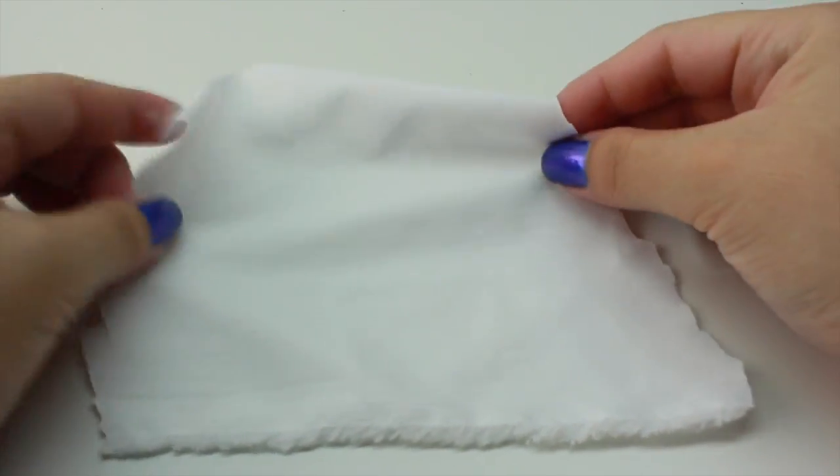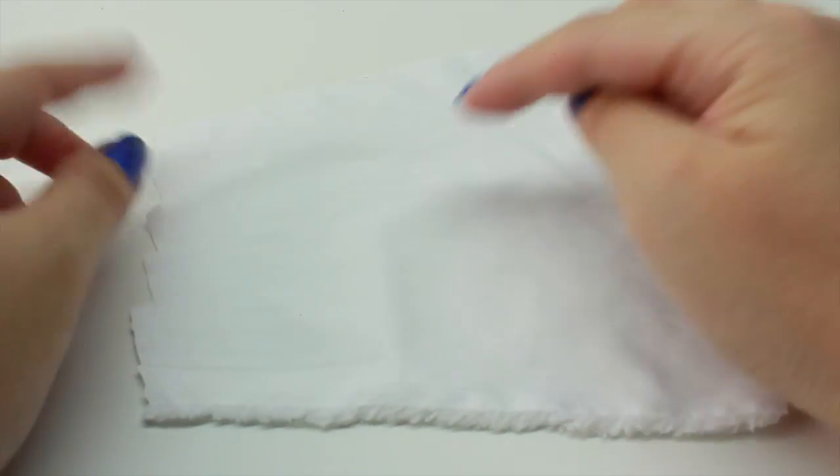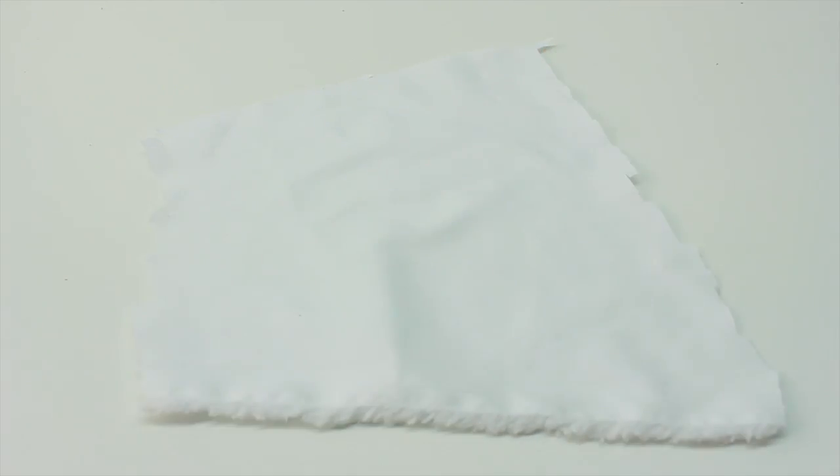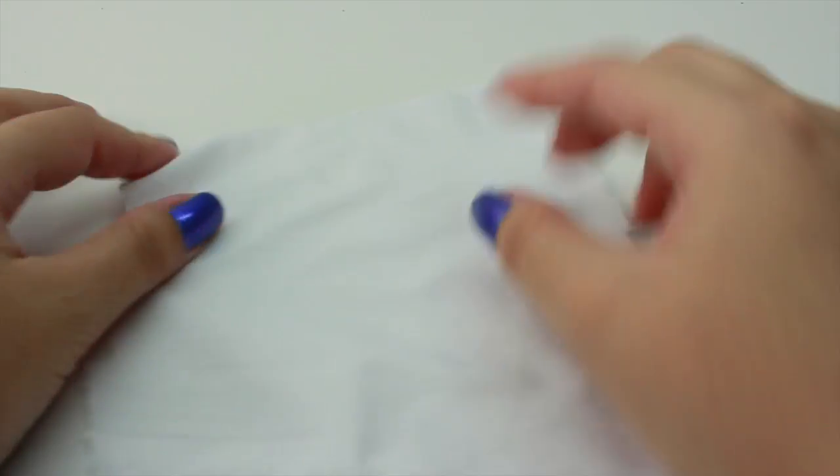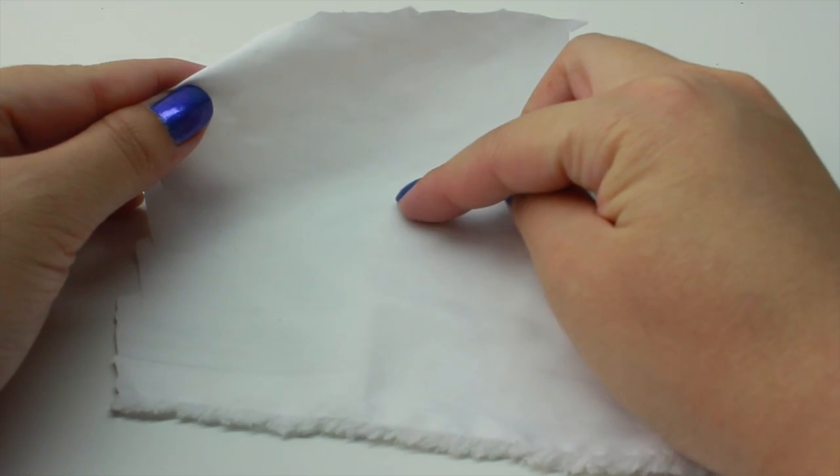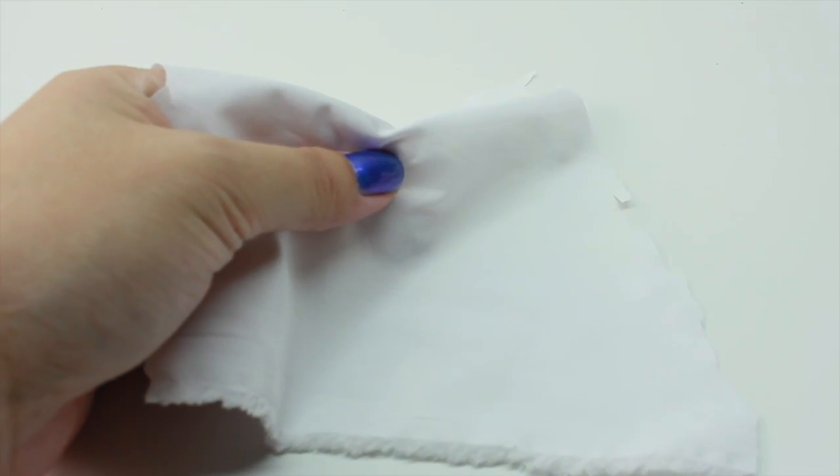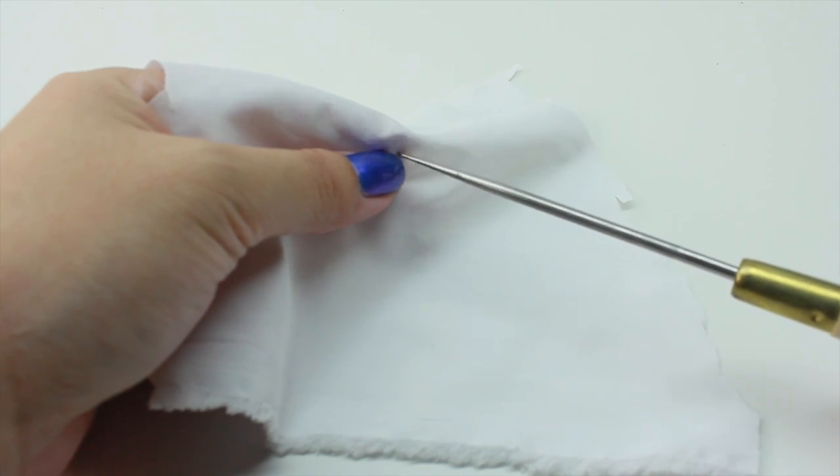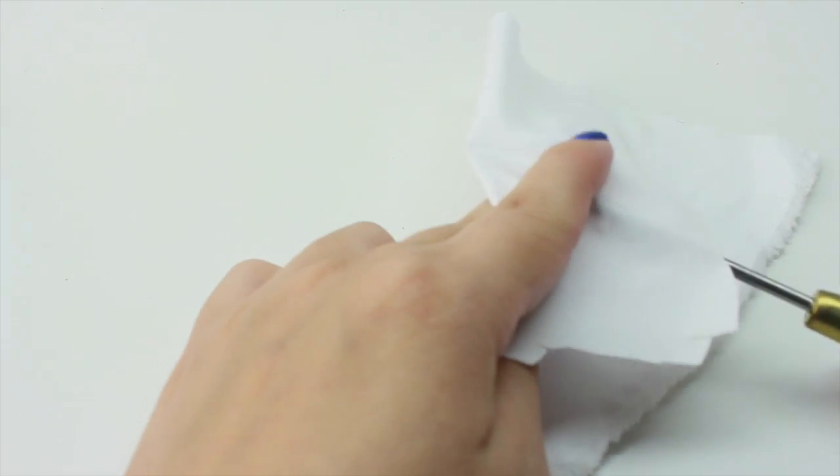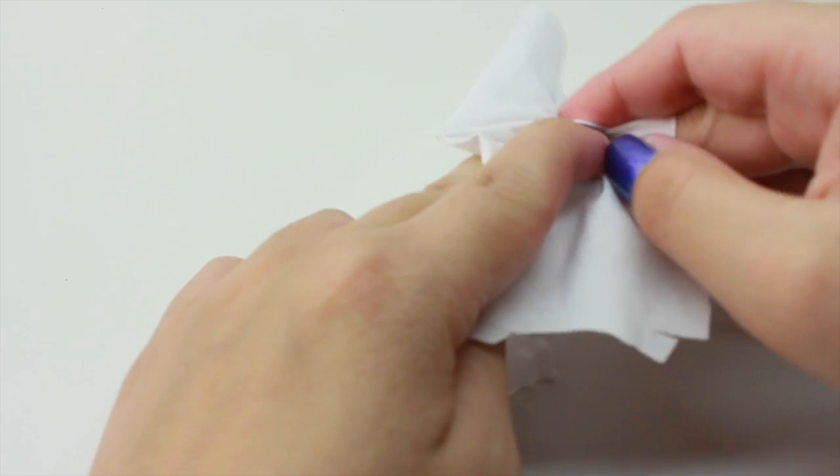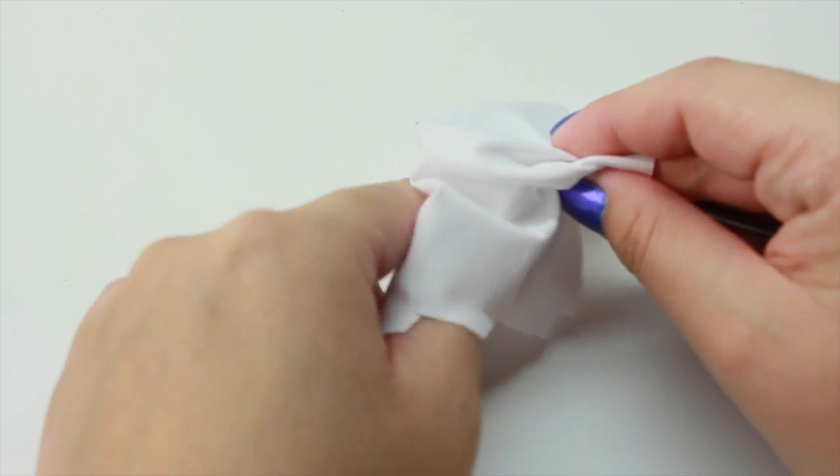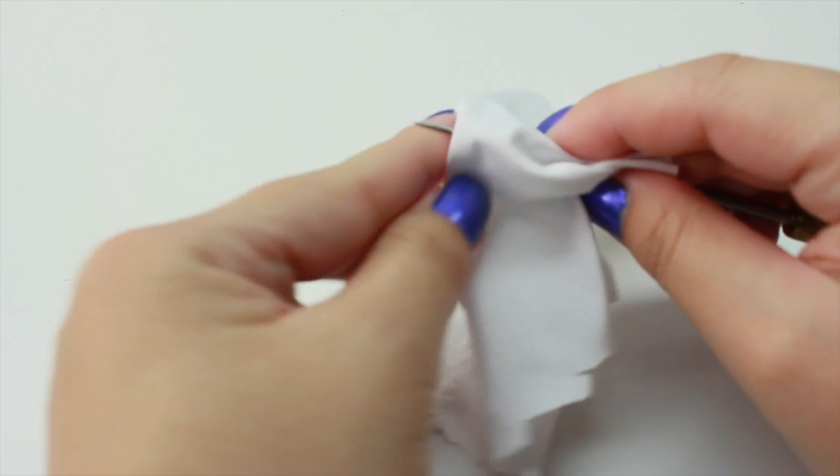The first thing we're going to do is take our fabric and poke a hole through the middle. I'm just going to eyeball where the middle is, and I think it's going to be somewhere around here. I'm going to hold it here and take my little tool and poke a hole through it. Be careful if you're using something sharp, otherwise you can try using a pen or a pencil to make the hole.